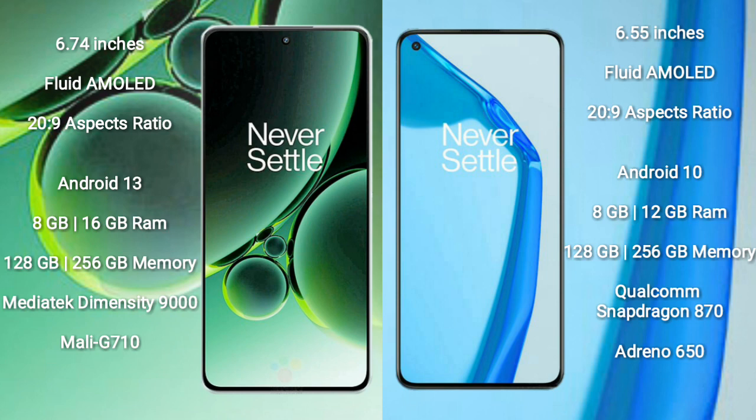OnePlus Nord 3 comes with 8GB or 16GB RAM and 128GB or 256GB internal storage, with a MediaTek Dimensity 9000 processor and Mali-G710 GPU.